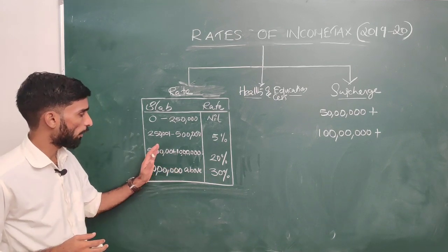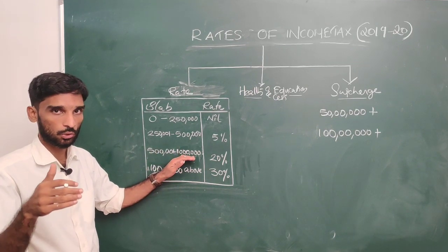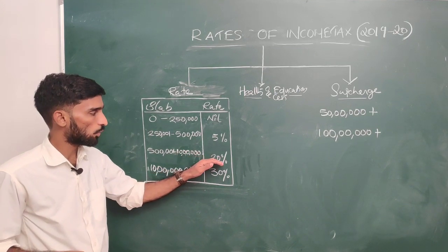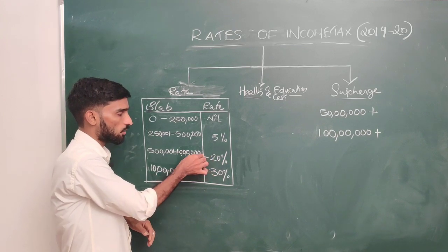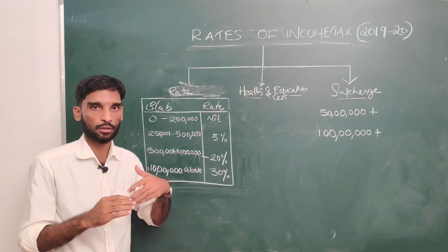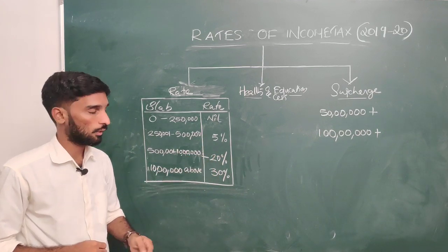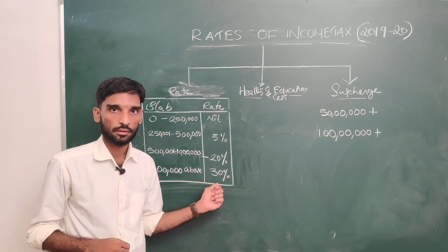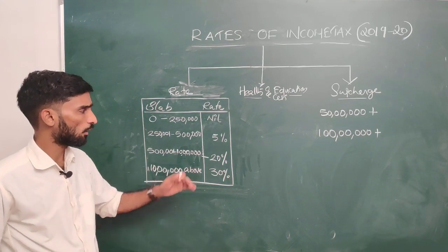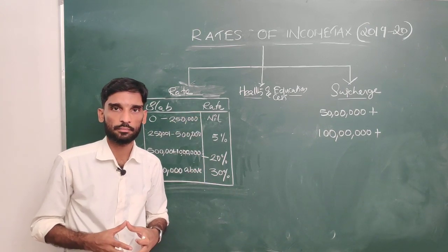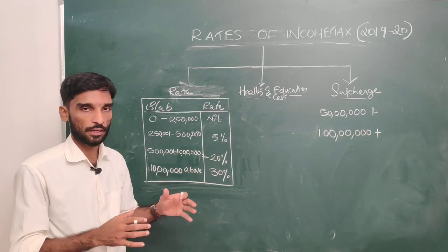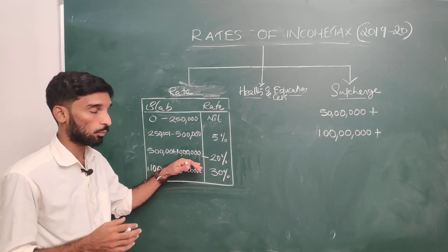Then 5 lakhs to 10 lakhs — 20% tax rate. And above 10 lakhs — 30% tax rate. This is the normal rate of income tax.